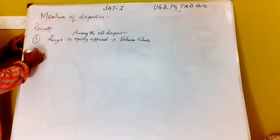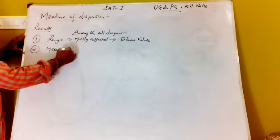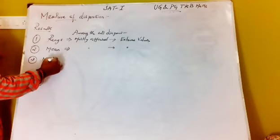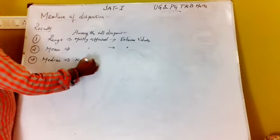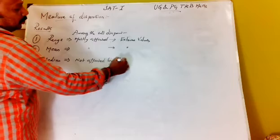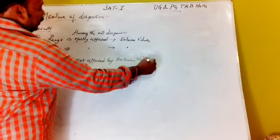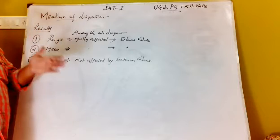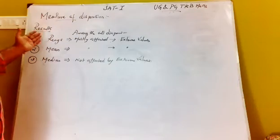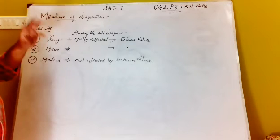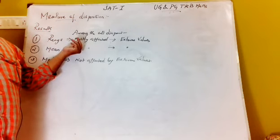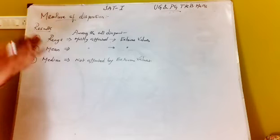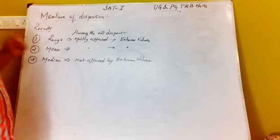So if you look at the extreme value, what is the effect of the extreme value? The mean is mostly affected by extreme value. If you look at the median, it is easier — median is not affected by extreme value. So if you compare, anything will affect the range and the mean for extreme value, but the median is not affected.